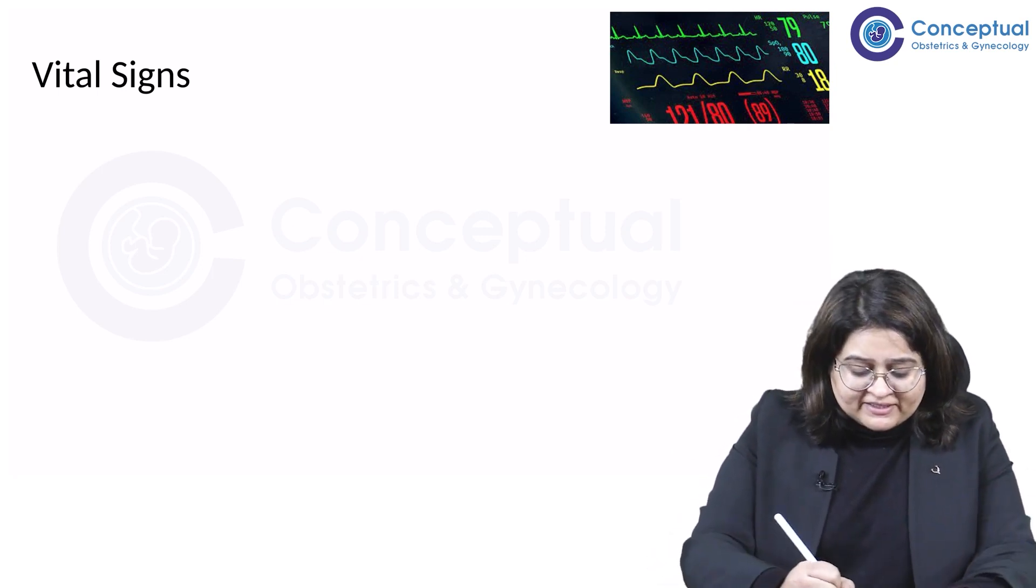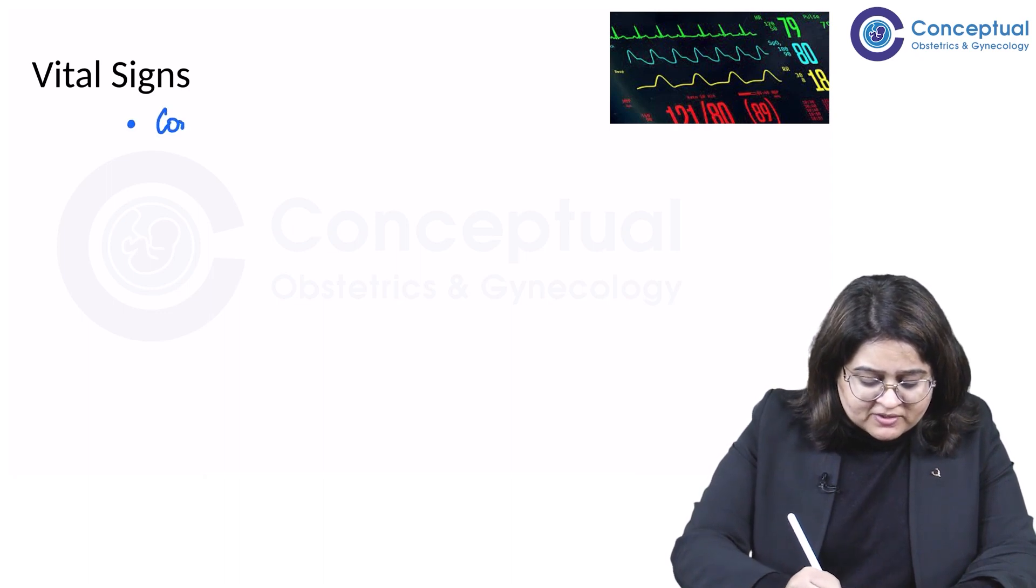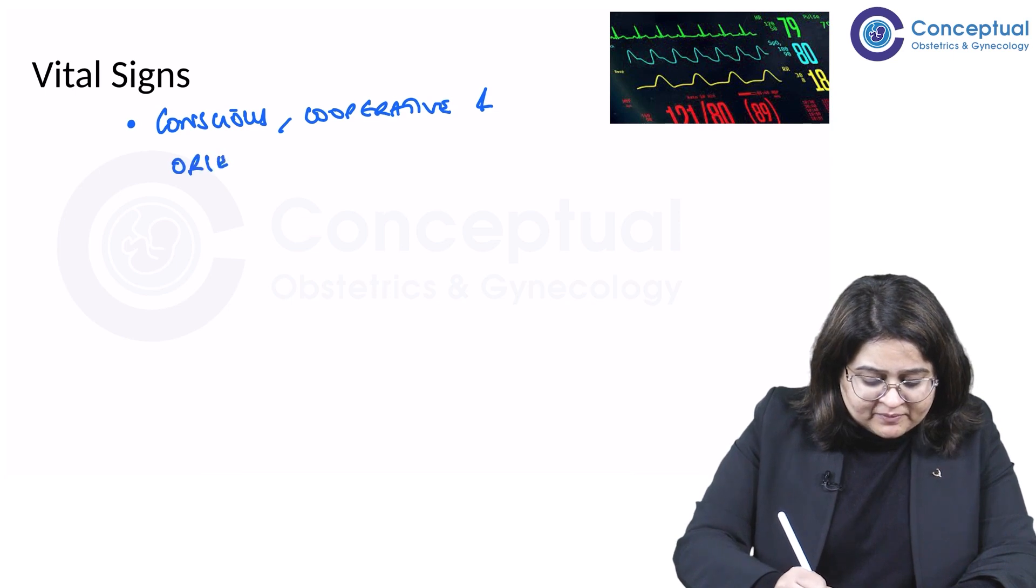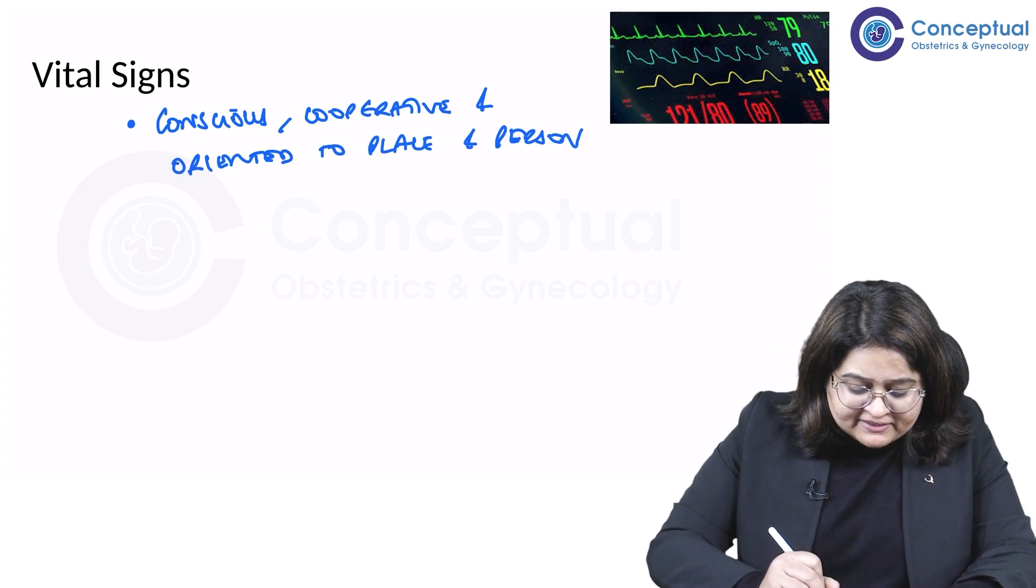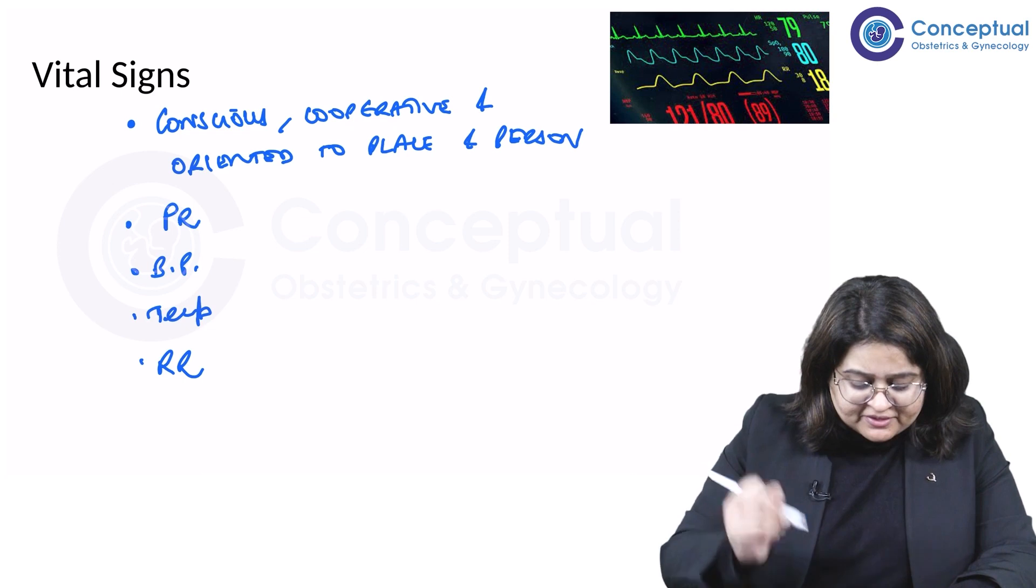So we start with the vital signs. The vital signs are basically including whether the patient is conscious, cooperative and oriented to time, place and person. That's the first thing we always see. The second thing is we check her vital signs and that includes the pulse rate, the blood pressure, her temperature, and the respiratory rate.